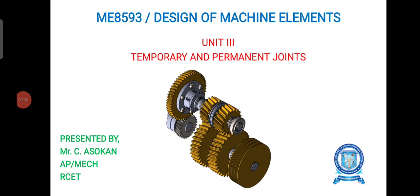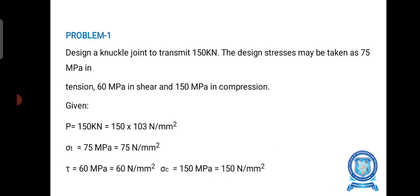Welcome to all. We are going to solve a problem from knuckle joint. Design a knuckle joint to transmit 150 kN. The design stresses may be taken as 75 MPa in tension, 60 MPa in shear, and 150 MPa in compression.